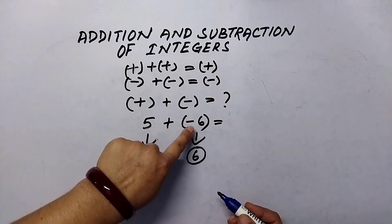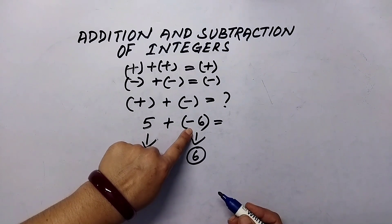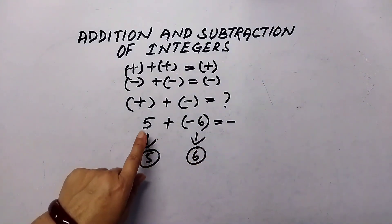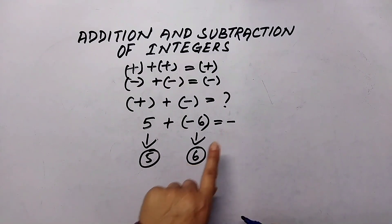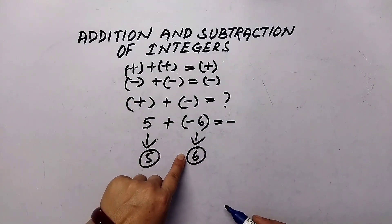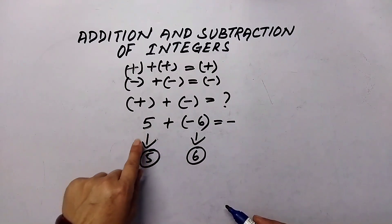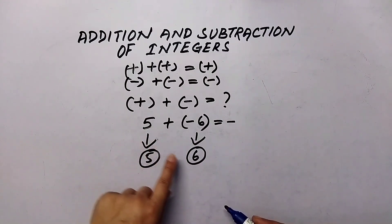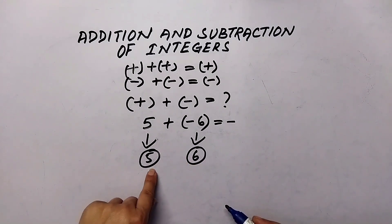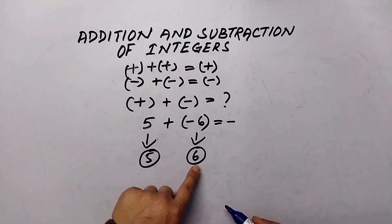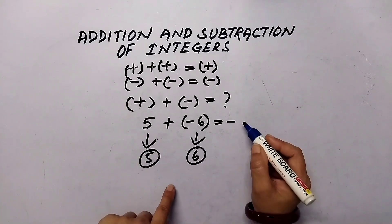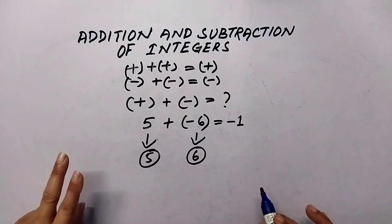Whose absolute value is more, we keep that sign in the sum. Next, how much greater is it than the other? Six is how much more than five? Simply subtract: six minus five equals one. So the sum is negative one.